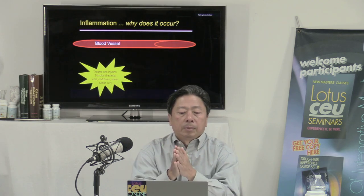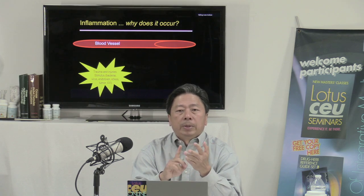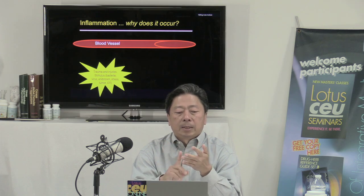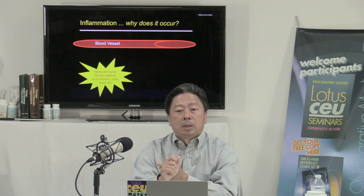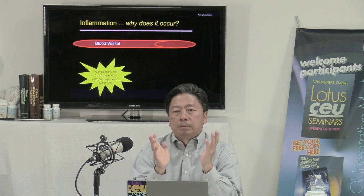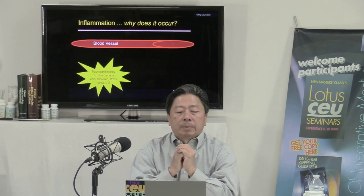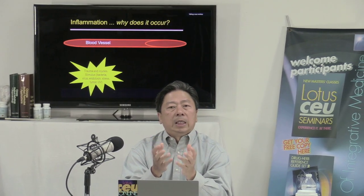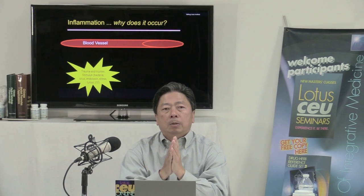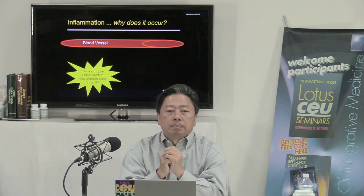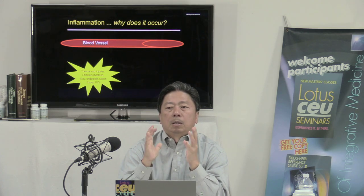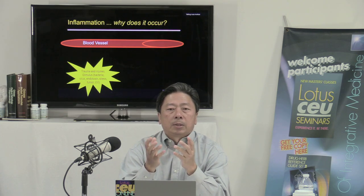Inflammation occurs because the body needs to repair itself. The cause could be trauma, injury, or some type of external stimulus — bacteria, virus, endotoxin, stress, tumor, ultraviolet radiation, and so on. This cause may be somewhere in your head, lung, ankle, or liver. The cells in your body need to get to the disease area in order to fix the problem.